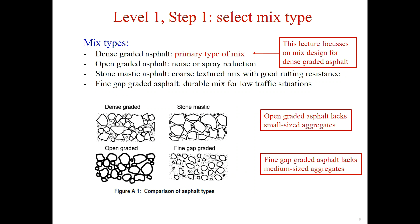There are mainly four asphalt types: dense graded, open graded, stone mastic, and fine-gap-graded. The most common type of asphalt is a dense graded mixture. This is the focus of our lecture.